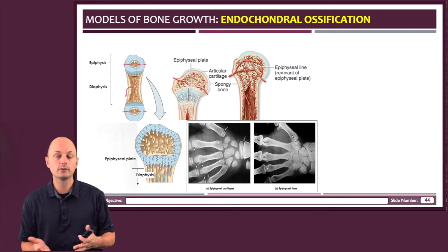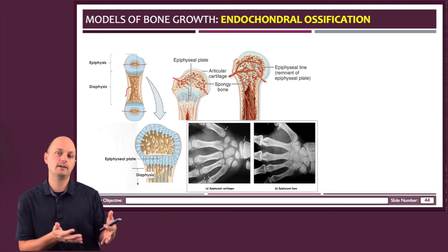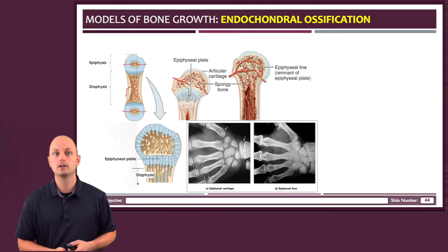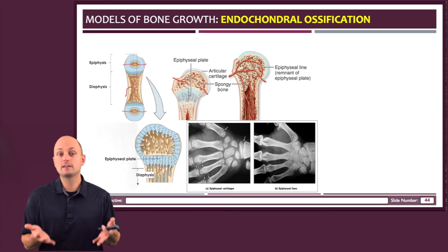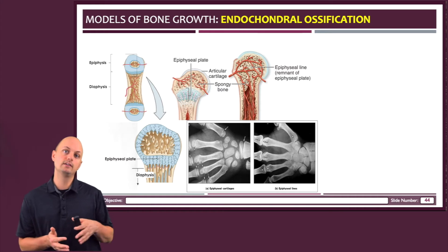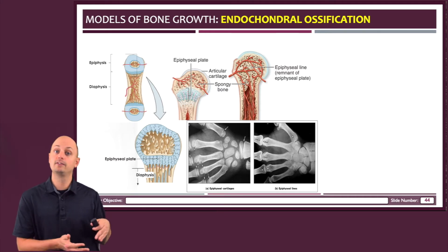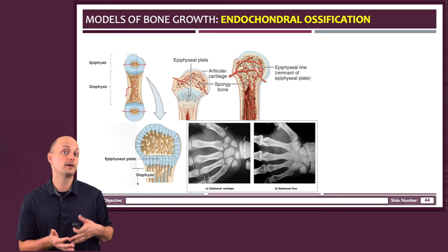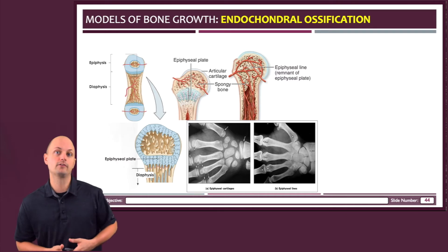Everything else would have been ossified or converted to bone. In the images at the bottom, if you look closely, you can see both the epiphyseal plate and the epiphyseal line in the metacarpal bones of the hand.